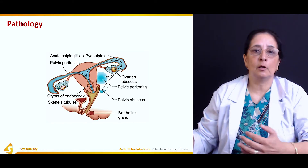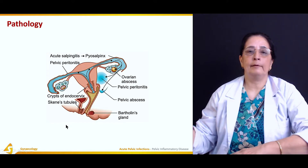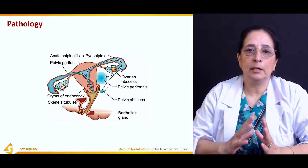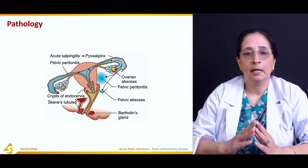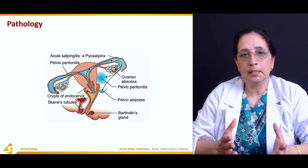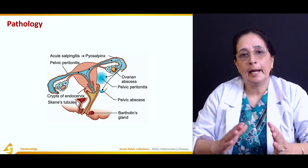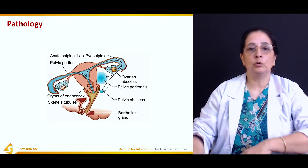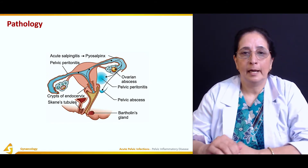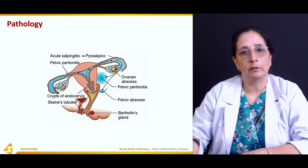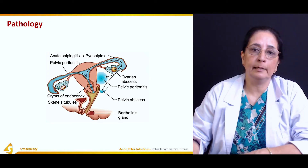Once it involves the peritoneum, it can spread to adjacent organs and structures. The naming of PID depends on the organ involved: if it is the tube, it is salpingitis; if it is the vagina, vaginitis; if it is the cervix, cervicitis. Infection can spread to adjacent areas leading to pus formation, scarring, and spread of infection to different parts of the body via the bloodstream or lymph nodes.